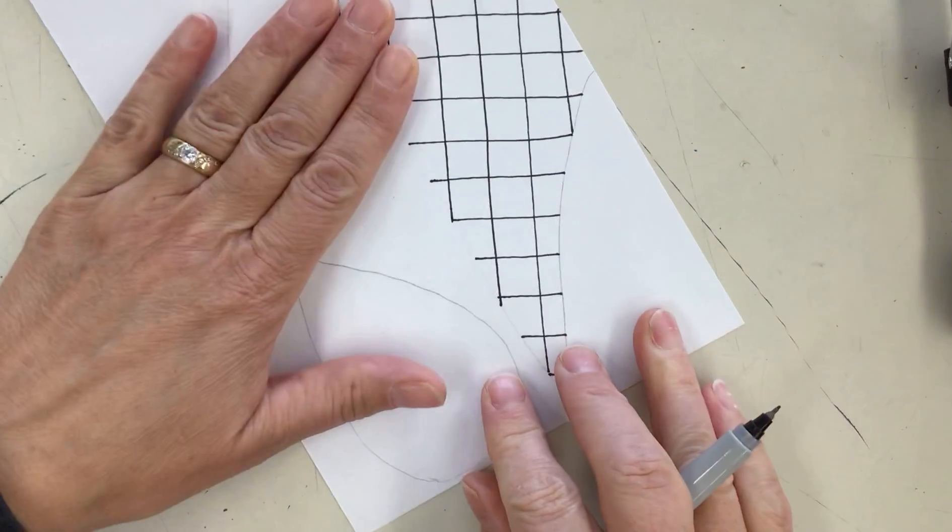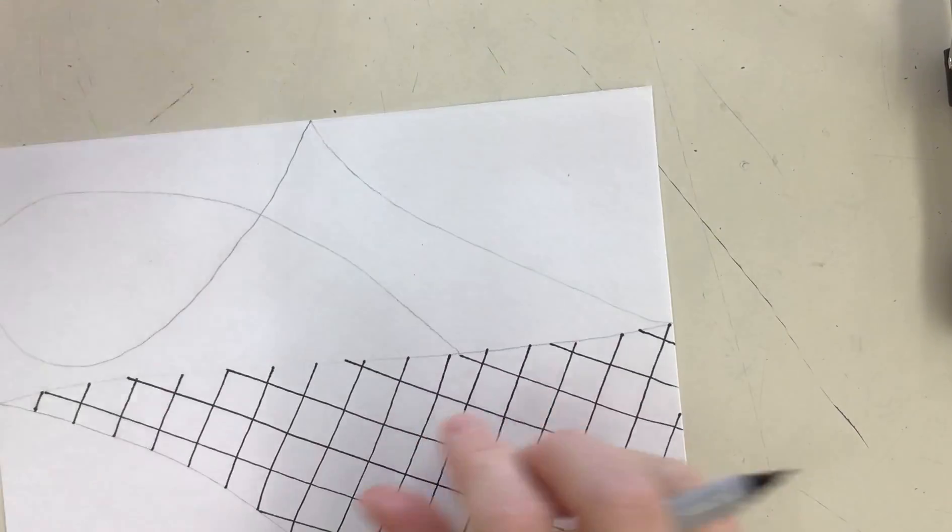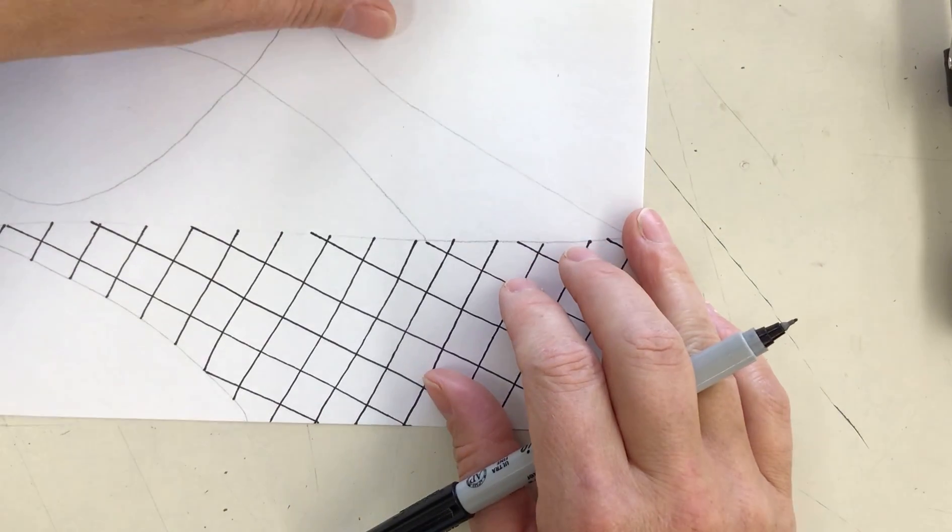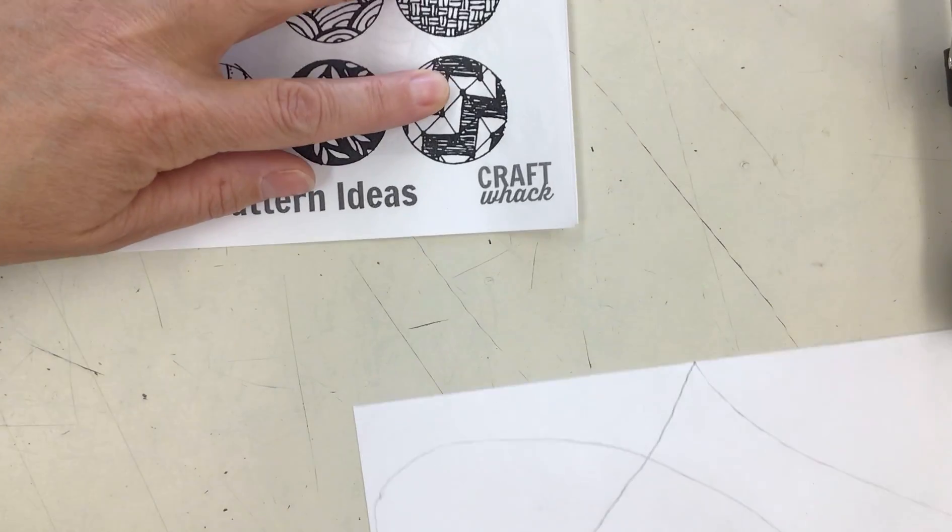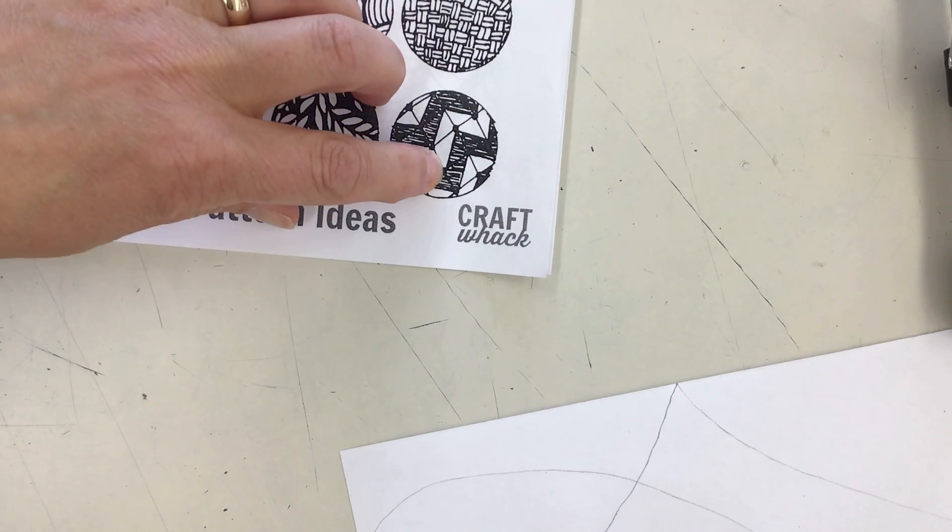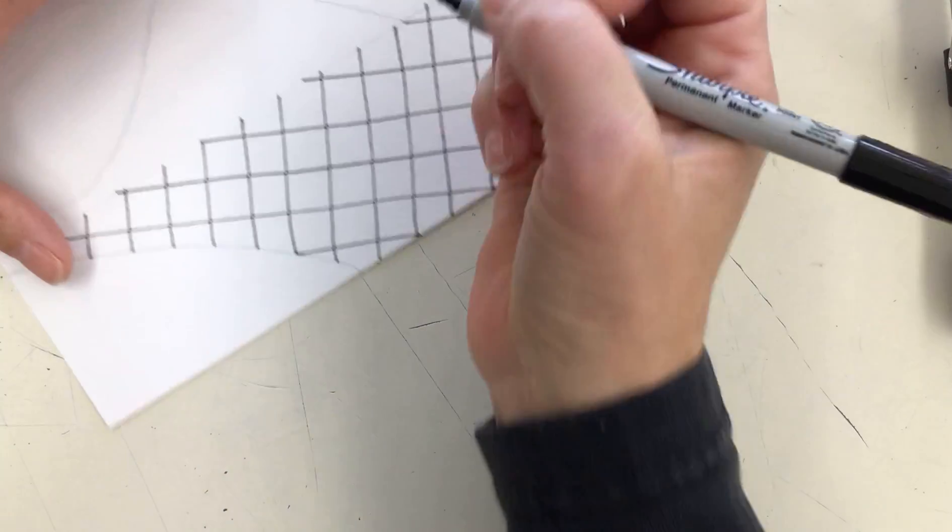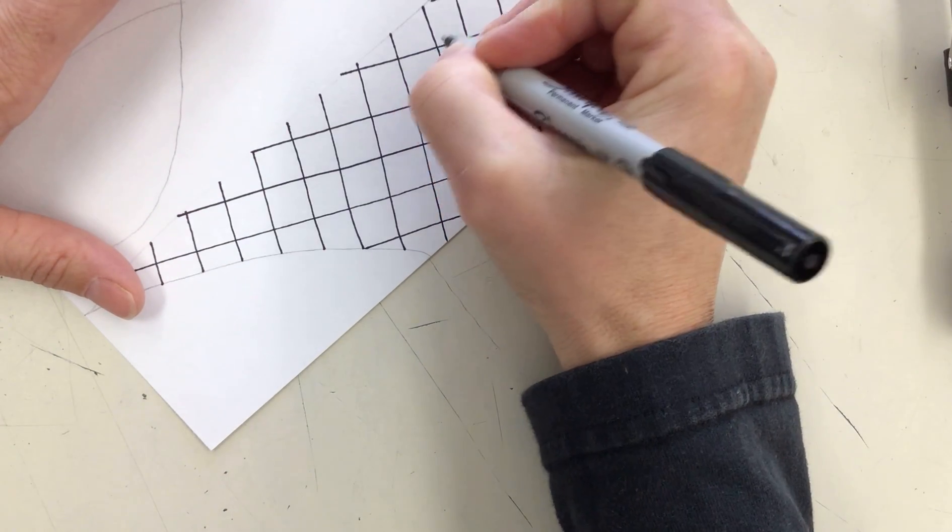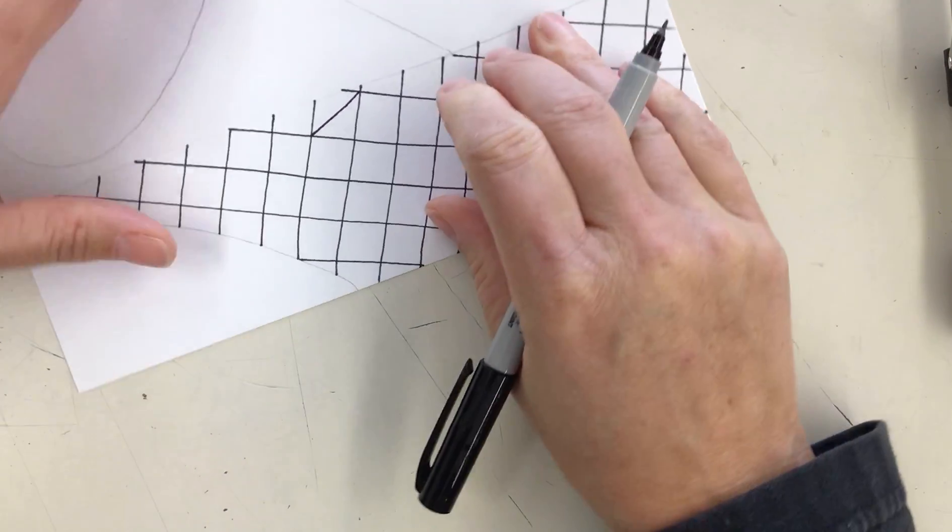So I have my grid drawn in there. My next step that I am going to do, if I look at this, I am going to be making diagonal lines from one corner of the grid to the other corner, just right across the squares. So I guess I will start, I'm going to start right here. That one goes there.